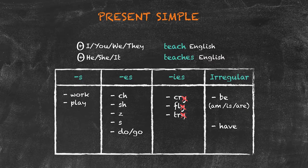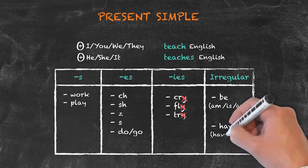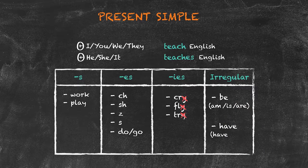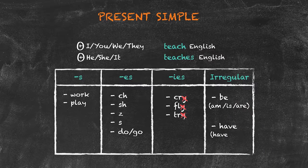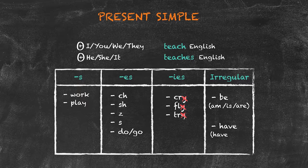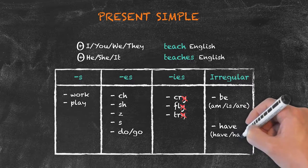Finally, we have have, which stays as have for these subjects: I, you, we, and they. But for he, she, and it, we change have to has.